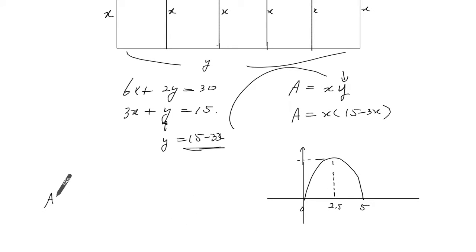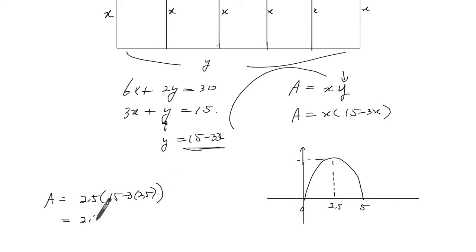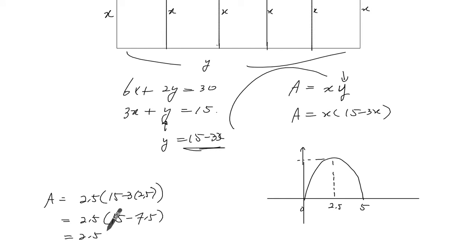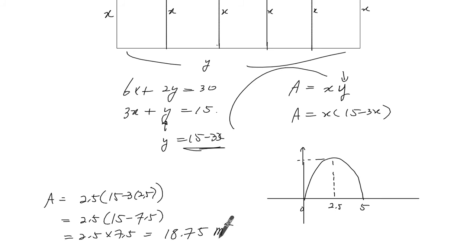So calculate this maximum area. It's going to be 2.5 times by 15 minus 3 times 2.5, so Y is 7.5. The maximum area is 2.5 times by 7.5, which is 18.75 meters squared.